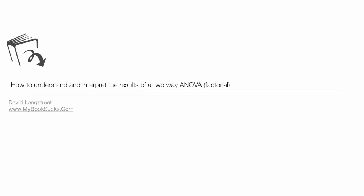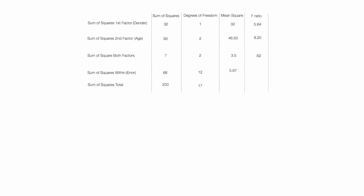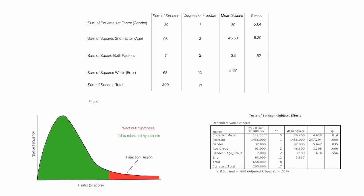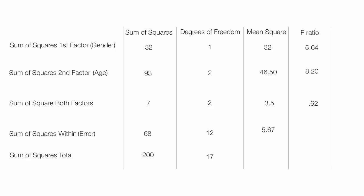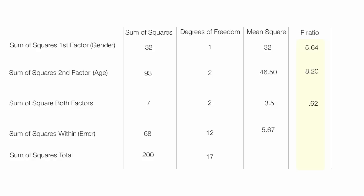In this tutorial, I'm going to help you understand and interpret the results of a two-way ANOVA, or a factorial. I'm also going to explain how to calculate the degrees of freedom. This tutorial is part of a larger playlist where I introduce two-way ANOVA, describe how to calculate it by hand, and how to interpret the results. I'm going to show you how to calculate the degrees of freedom, the mean square, and the F-ratio, and how to determine whether to reject or fail to reject the null hypothesis.